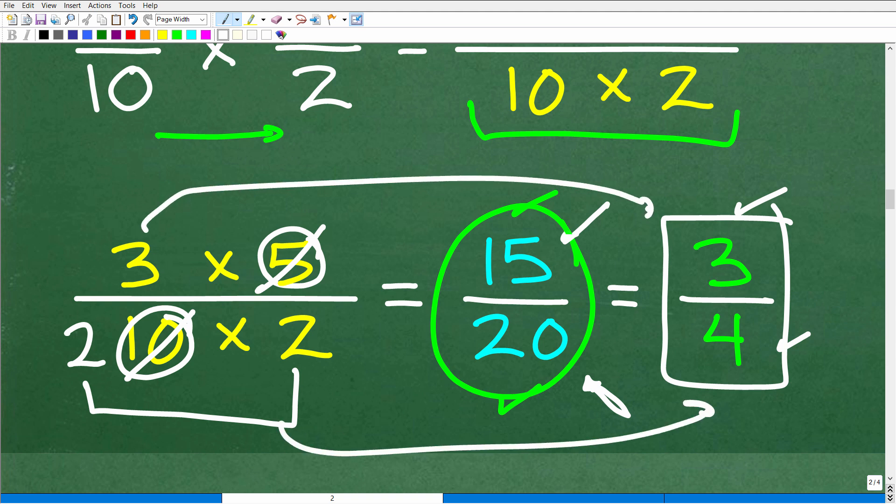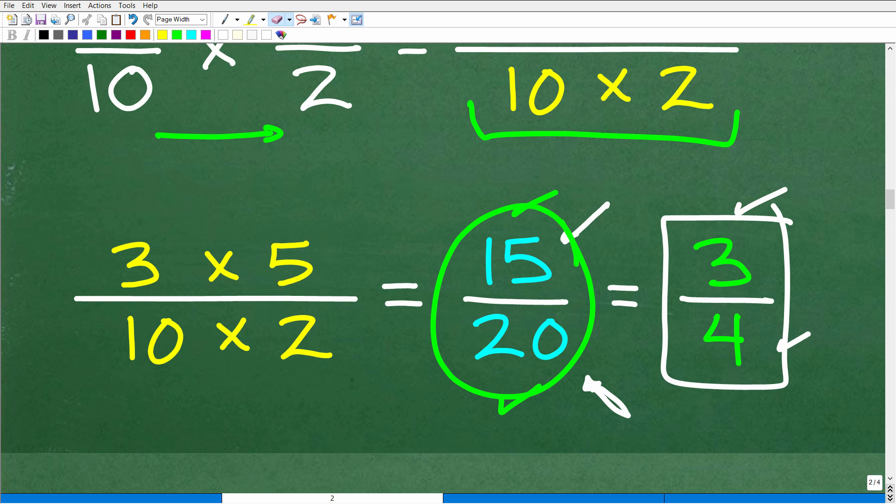And then here we have a 3 in the numerator. But let's go ahead and look at this differently here just so you understand. I'm kind of taking an extra step. I really want to make sure you understand how to simplify fractions. So here we have 3 times 5. This is 10 times 2. Let's write 10. Remember, there was a 10 here. Let's write that as 2 times 5.